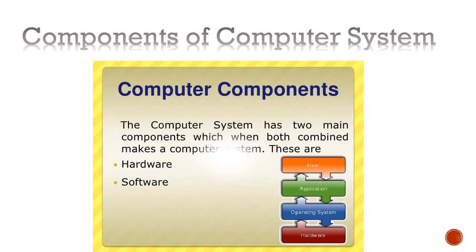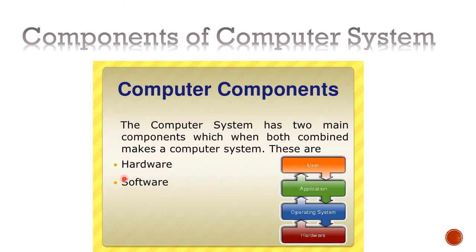The next topic is the components of the computer system. Students, there are two components: computer hardware and software. Hardware is the touchable part which we can touch. Software is the part we can't touch in the computer — we call it software, which we use with different functions to operate.